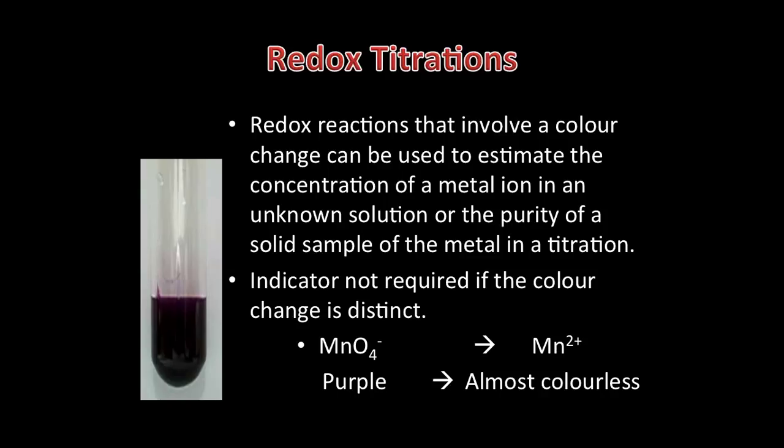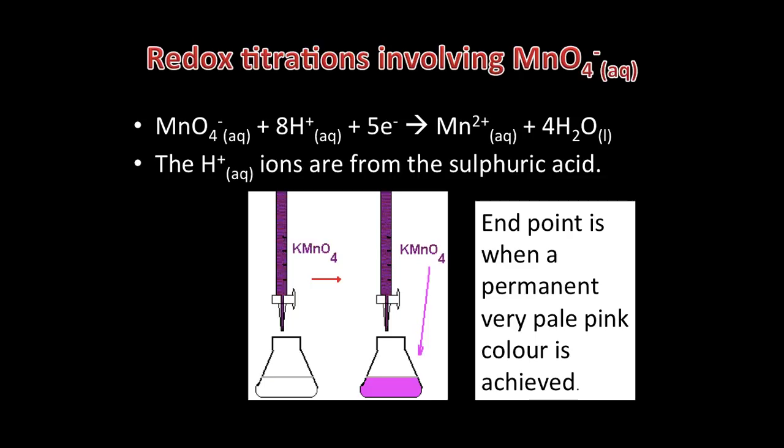These titrations are carried out in a similar way to acid-base titrations. However, an indicator is not always needed if the colour change in the oxidation state of the transition metal involves a change in colour. For example, aqueous manganate 7 contains the ion MnO4-, which is a deep purple colour. When it's reduced to Mn2+, it goes almost colourless.